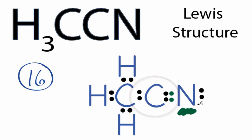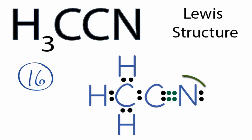Let's take these two right here and form a triple bond. Again, the nitrogen still has eight valence electrons, but now that carbon also has eight valence electrons, and we're only using the 16 valence electrons we have for the H3CCN Lewis structure.